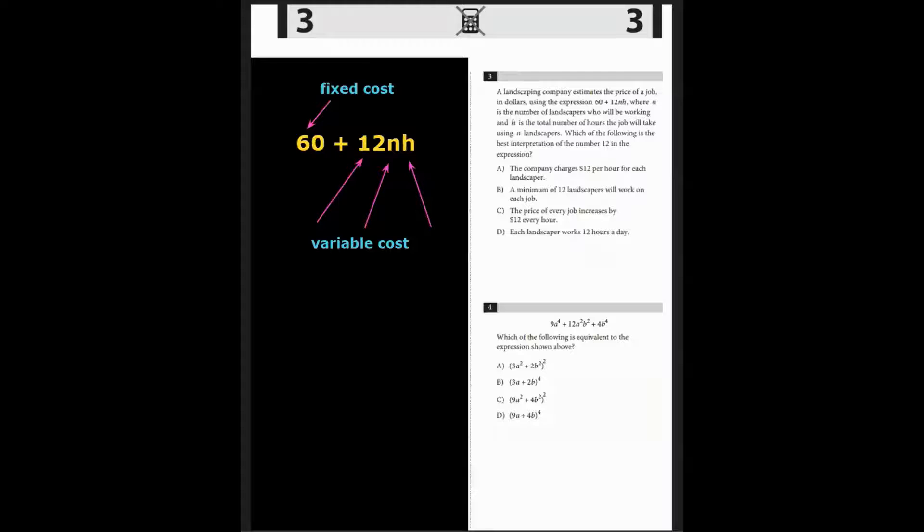Question 3. A landscaping company estimates the price of a job in dollars using the expression 60 plus 12NH, where N is the number of landscapers who will be working and H the total number of hours the job will take using N landscapers. Which of the following is the best interpretation of the number 12 in the expression?